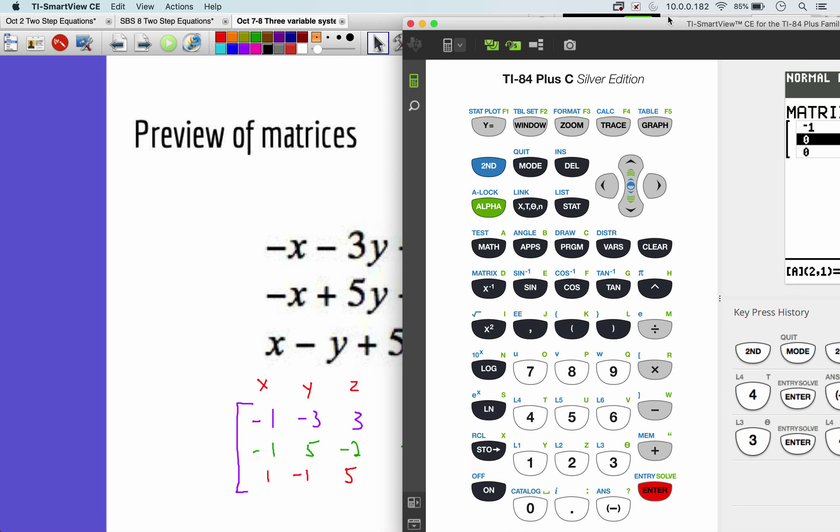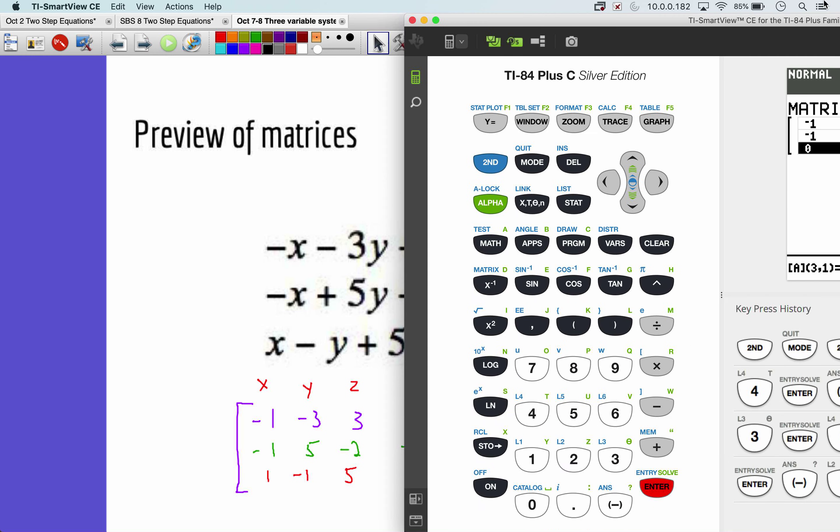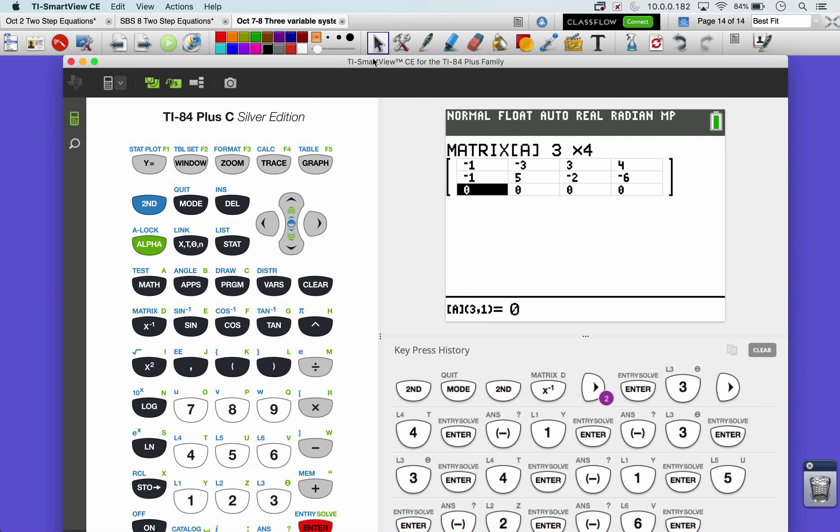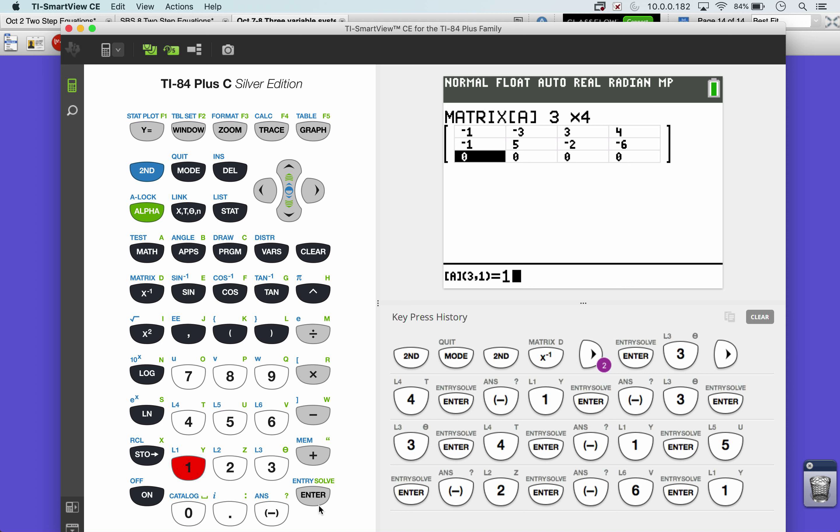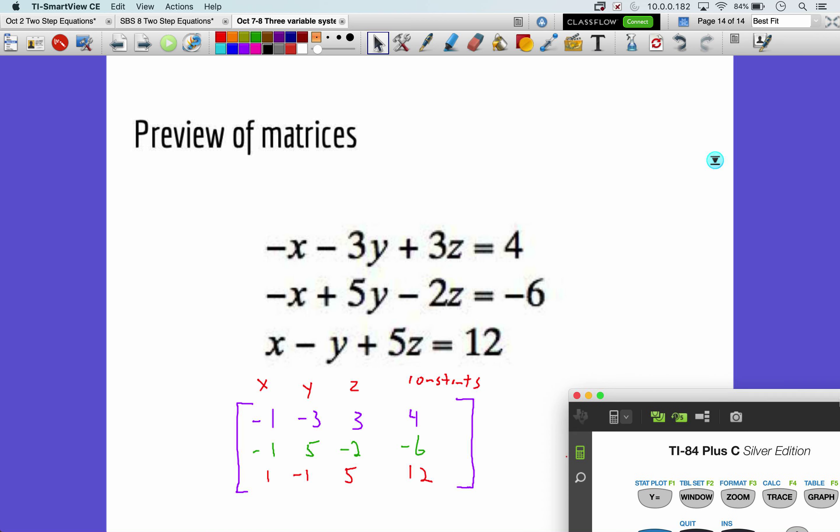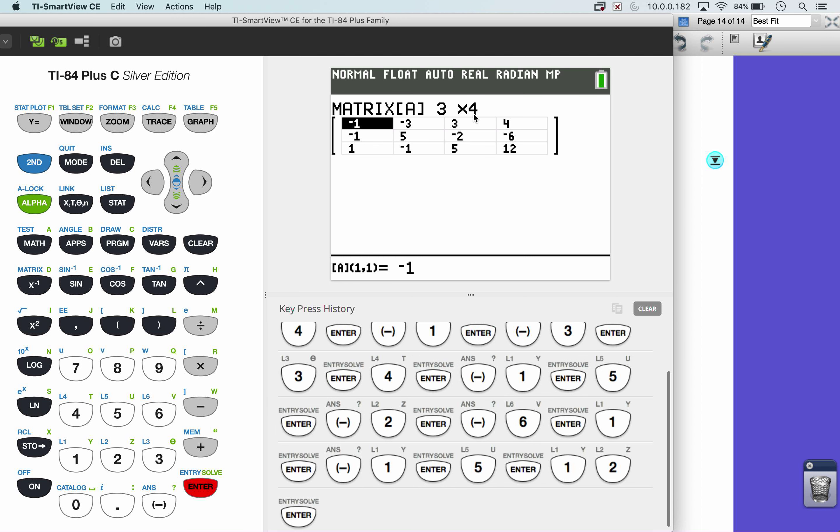Next one is negative 1, 5, negative 2, 6, and the last one is 1, negative 1, 5, 12. So, 1, negative 1, 5, 12.